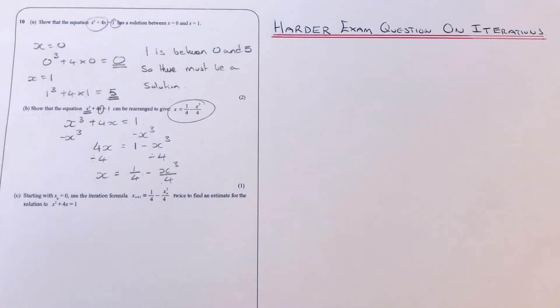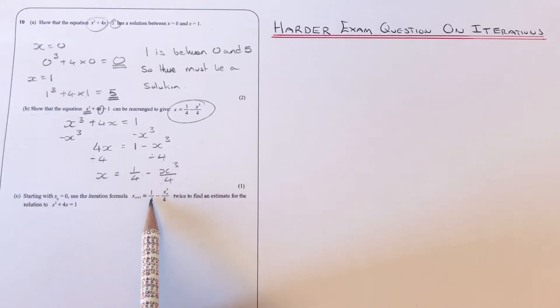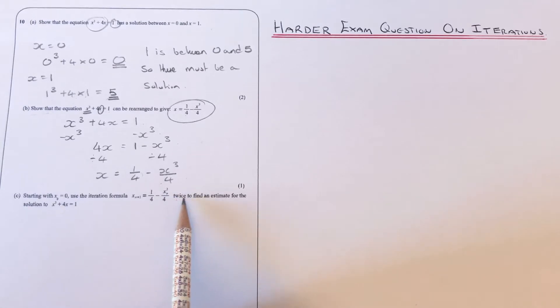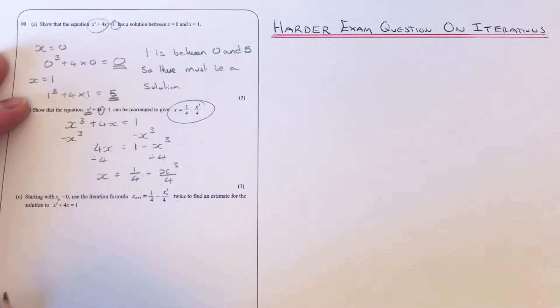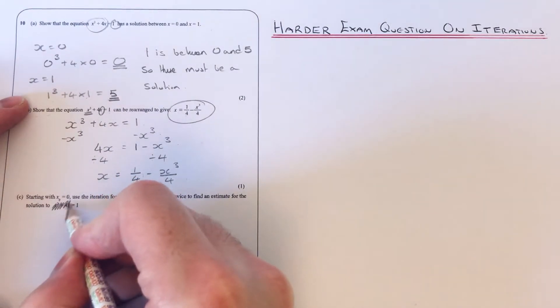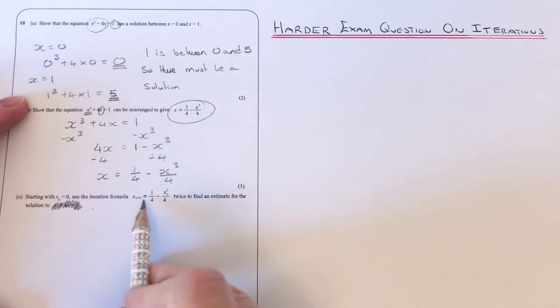Okay, so let's move on to part C. It says start with x₀ = 0, use the iteration formula xₙ₊₁ = ¼ - xₙ³/4 twice to find an estimate for the solution. Okay, what you don't have to use is this bit here. So we're going to use this iteration formula.